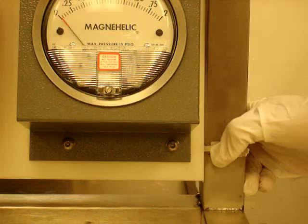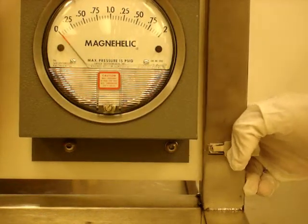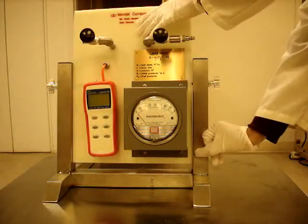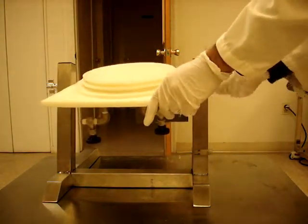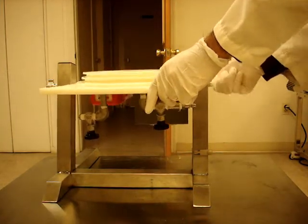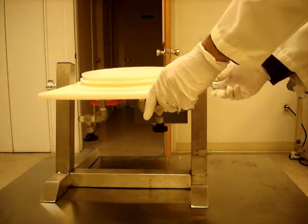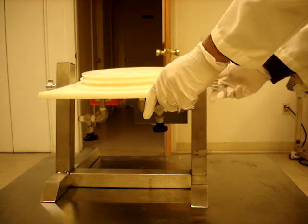A locking mechanism is released and the testing module can pivot freely on a horizontal axis. The connection is placed in a position comfortable for the operator to attach the glove. Side handles are then tightened to prevent movement of the testing module when gloves are attached.